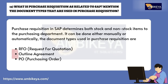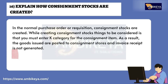Question number sixteen: explain how consignment stocks are created. In a normal purchase order or requisition, consignment stocks are created. When creating consignment stocks, you must enter item category K for the consignment item. As a result, the goods issued are posted to consignment stores and invoice receipt is not generated.